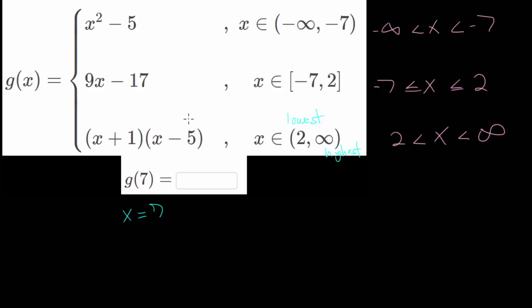And that just means we want to use this output here. So we have g of 7. We will plug an x value of 7 into our function here. And we're just using this factored quadratic here. We have 7 plus 1 multiplied by 7 minus 5. And 7 plus 1, that is 8. And we'll multiply by 7 minus 5, which is 2. And 8 times 2 is 16.